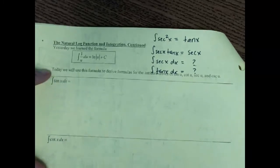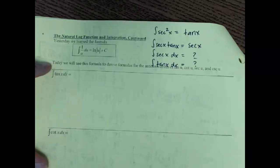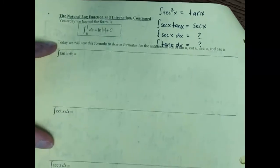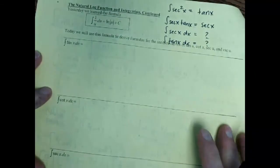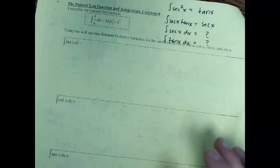The tangent and cotangent are similar to each other, and those ones won't be too bad. But the secant and cosecant are a little bit nastier. Let's jump into this first one.